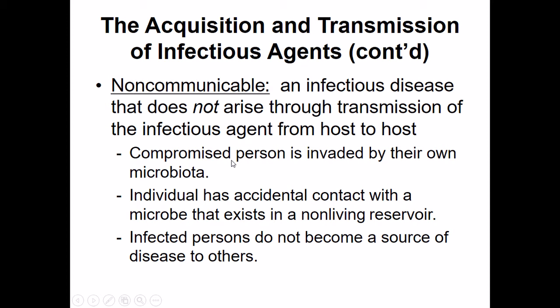Sometimes we'll have a compromised person invaded by their own microbiota. A common example would be a C. diff, or Clostridium difficile, infection. Sometimes an individual will come in contact with a microbe reservoir that's in a non-living reservoir — for example, some old vials of smallpox virus discovered in a research lab. These infected people don't become a source of disease to other individuals because they're non-communicable; they cannot spread that disease to others.